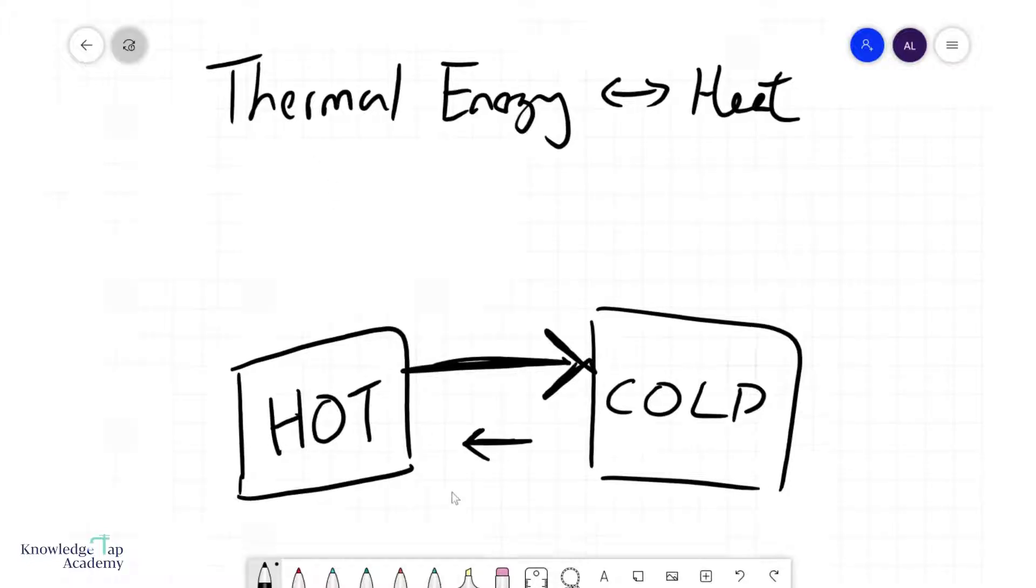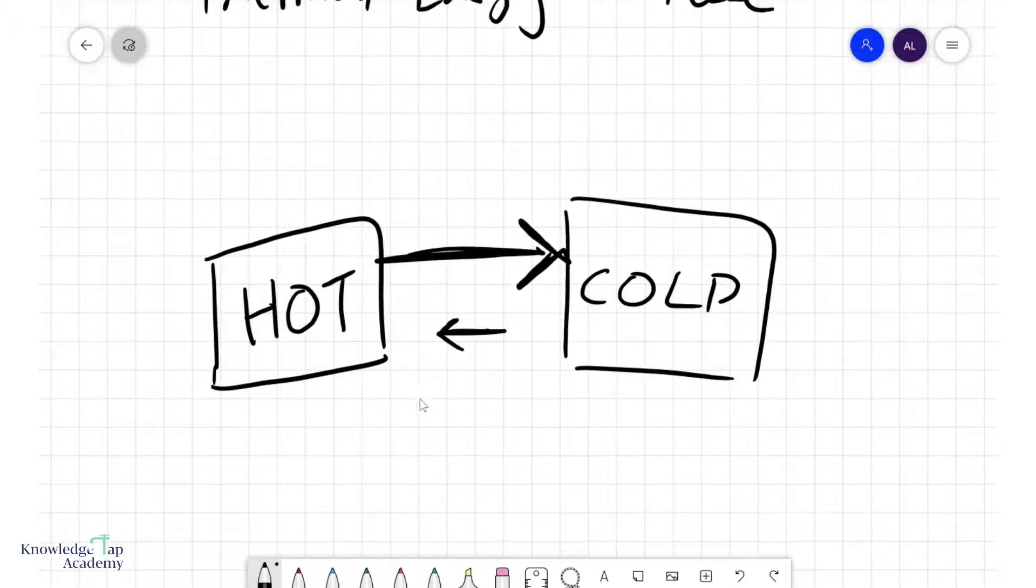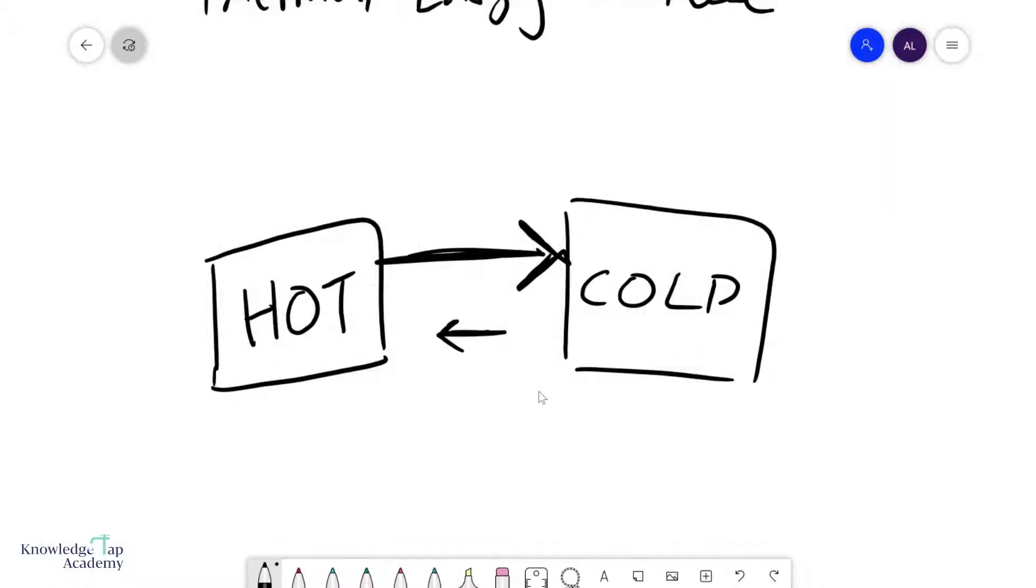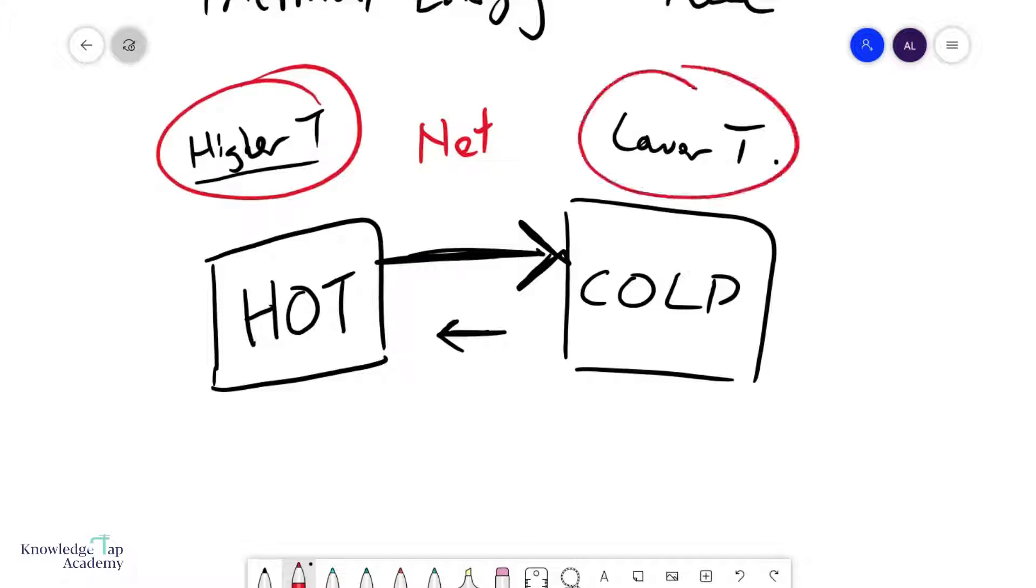Now the rule is very simple. When you have a hot object and a cold object, or a hot body or a cold body, hot is simply meaning you have a higher temperature, this is a lower temperature. The net flow of heat is always from the body with the higher temperature to the body with the lower temperature.